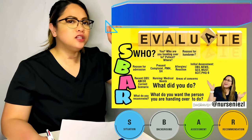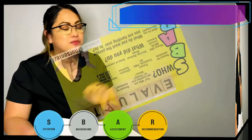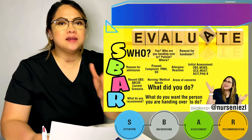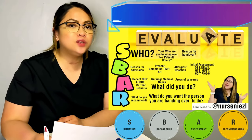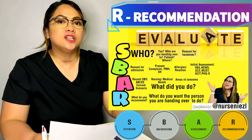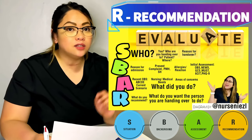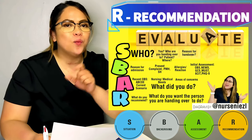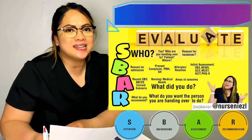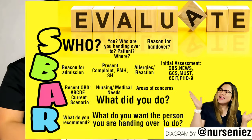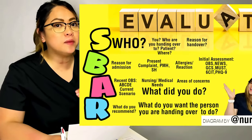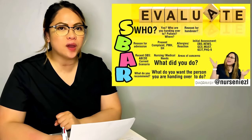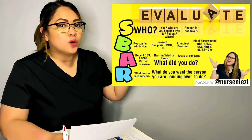Now for the Recommendation, just remember — what do you recommend? Or in my own structure: what do you want the person that you're handing over to, to do? If I will be the examiner, then my question is: what do you want me to do? This is your recommendation. Now that I have revealed to you the SBAR that I commonly use, in accordance to the marking criteria, which I can easily remember and follow — shall we give it a try?